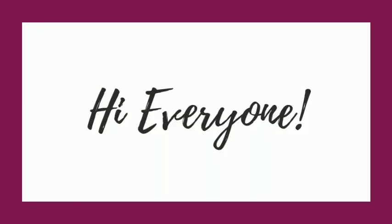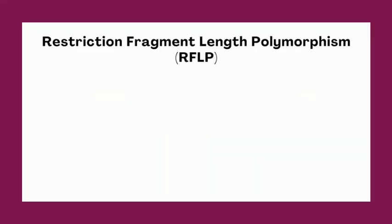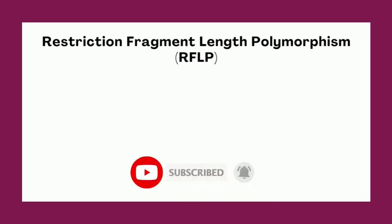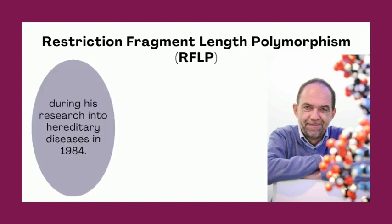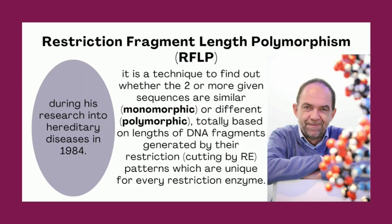Hi everyone. Restriction Fragment Length Polymorphism, or RFLP, is a technique invented by English scientist Alec Jeffries during his research into hereditary diseases in 1984. As suggested by its name, it's a technique to find out whether two or more given sequences are monomorphic or polymorphic, based on lengths of DNA fragments generated by their restriction patterns, which are unique for every restriction enzyme.